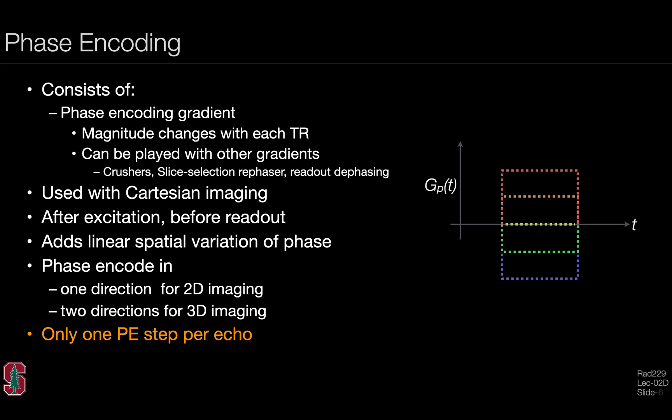We only typically acquire one phase encoding step per echo, and consequently we have to acquire dozens, hundreds, or even thousands of echoes to fill k-space with sufficient data to reconstruct an image of the underlying object.